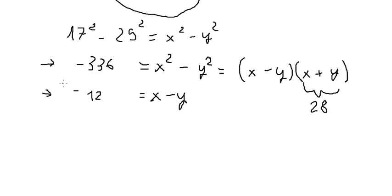Now we combine x minus y equals negative 12 with x plus y equals 28, so we can find x and y. We get x equals 8 and y equals 20.